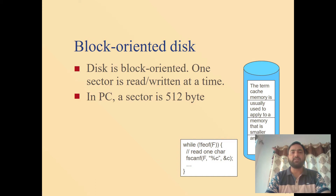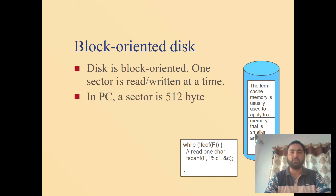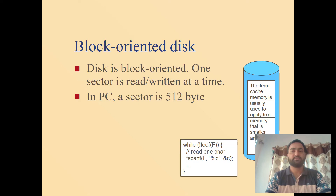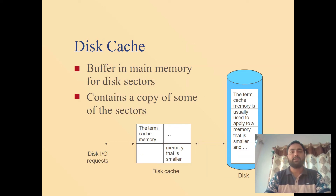In a block-oriented disk, one sector is read or written at a time. When data transmission occurs between the system and the disk — that is, when an I/O operation is performed — data is transmitted in the form of blocks, which are collections of related data grouped together. In a particular computer system, a sector is of 512 bytes, which is the standard size of a sector.